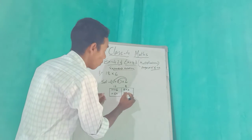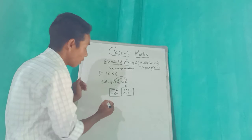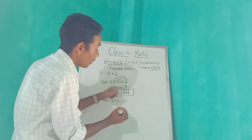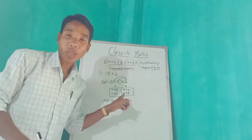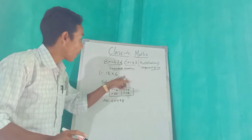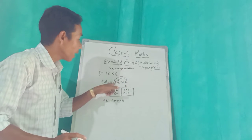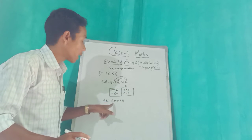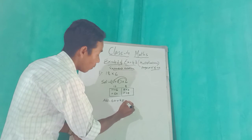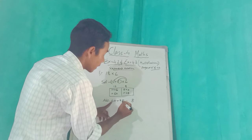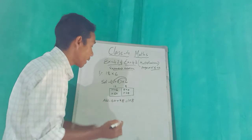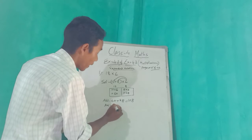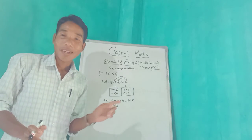8 into 6 equals how much? 48. So now what do we have to do? We add: 60 plus 48. First we do expanded notation, so 10 into 6 gives us 60, and 8 into 6 gives us 48. So 60 plus 48 equals 108. Our answer is 108.